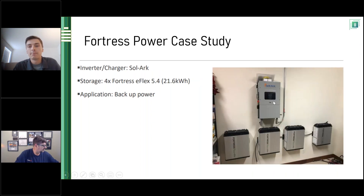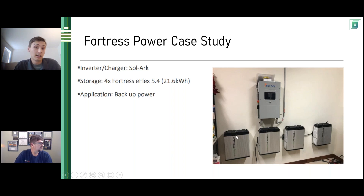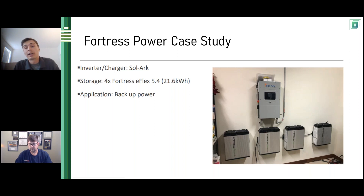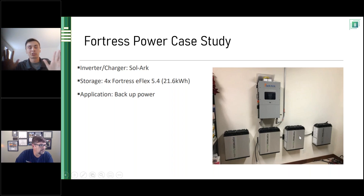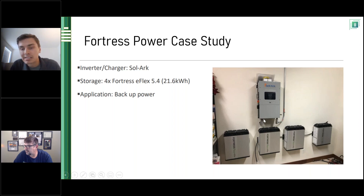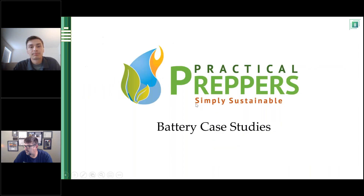The last case study shows a SolarK inverter with four e-Flexes in parallel for backup power. They wall-mounted them — I like this installation a lot because maybe you don't have room for a flex rack or an e-Vault Max. You can put four of them on the wall very cleanly, out of the way in a garage, and hook them right up with the inverter of choice. Here we have what I believe is a 12 kW SolarK inverter. There are a lot of different ways to install depending on your home project.